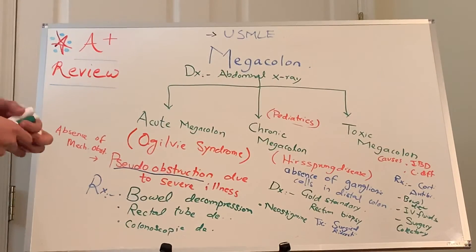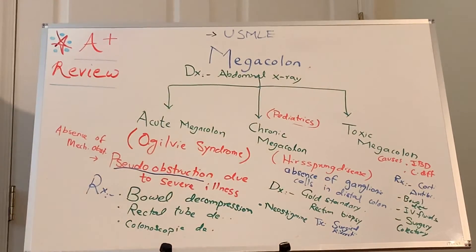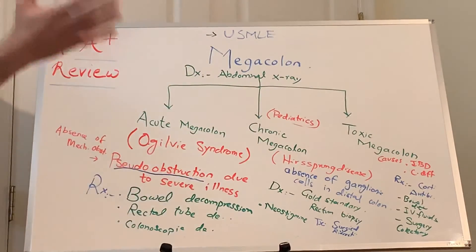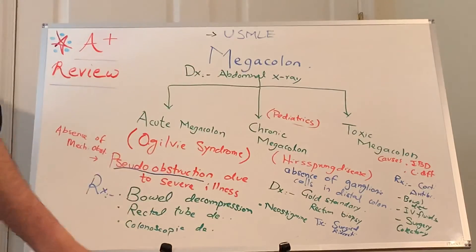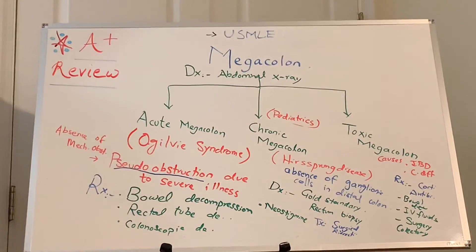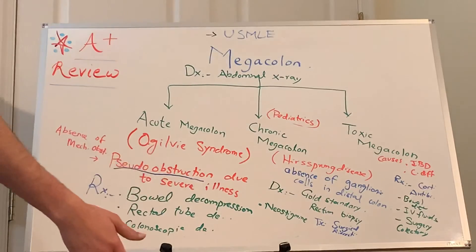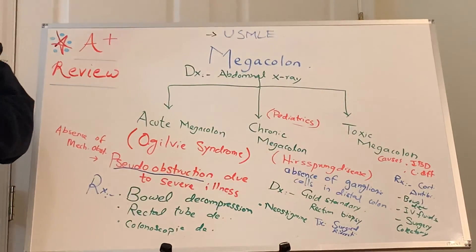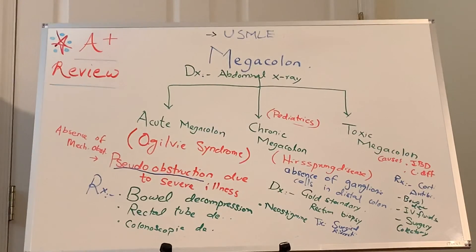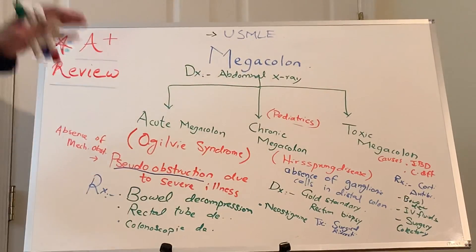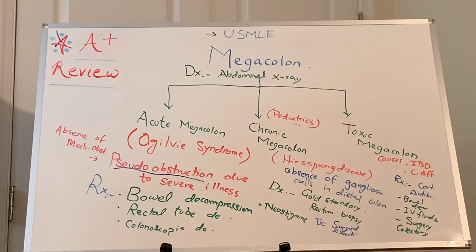Abdominal X-ray is the mainstay for diagnosis across most of these. For chronic megacolon or Hirschsprung, the gold standard is rectal suction biopsy. To differentiate large bowel obstruction versus small bowel, go with the location — small bowel obstruction is usually secondary to adhesions from past abdominal surgery, while large bowel is more likely neoplastic. For Hirschsprung, another good initial test is contrast enema, which helps distinguish Hirschsprung from meconium ileus — something to be covered in the next lecture.